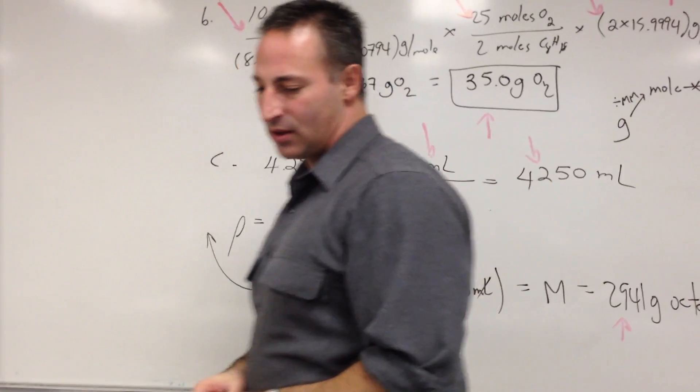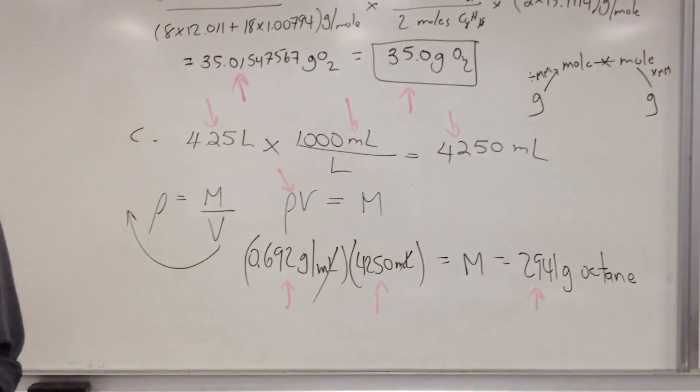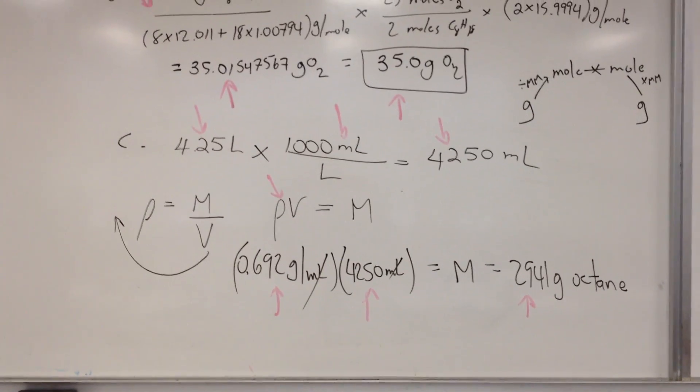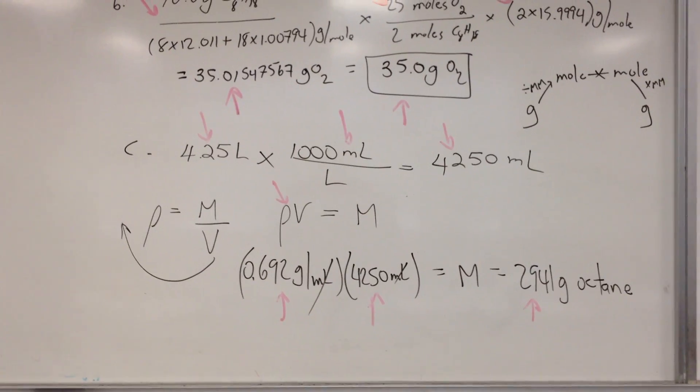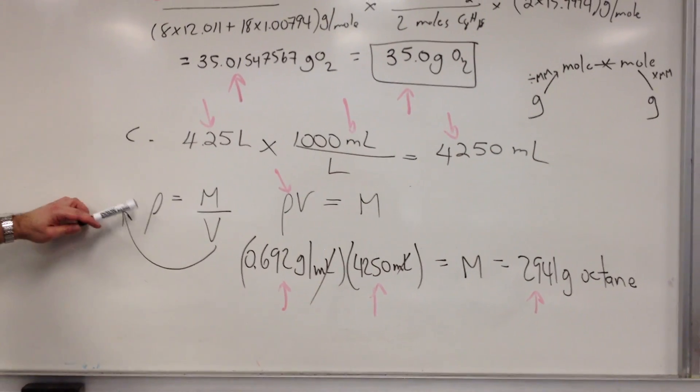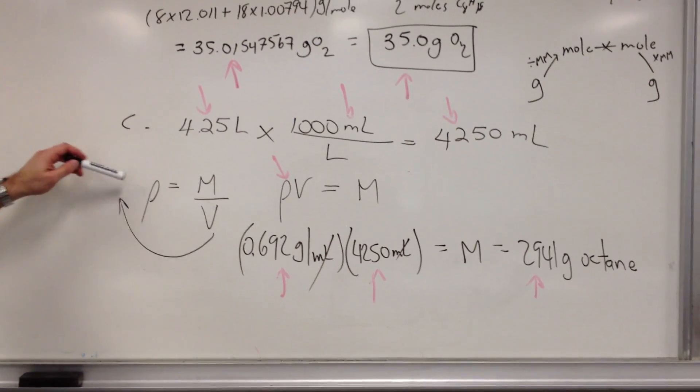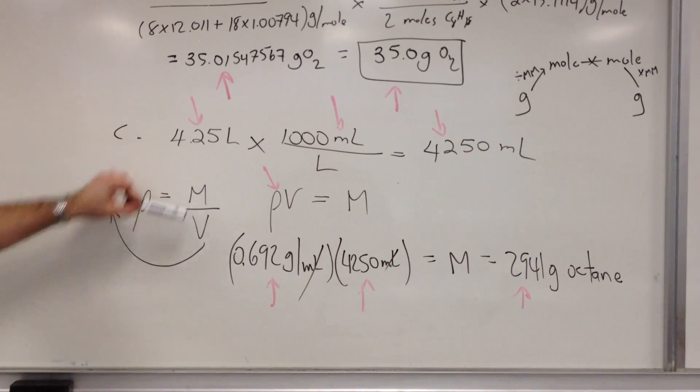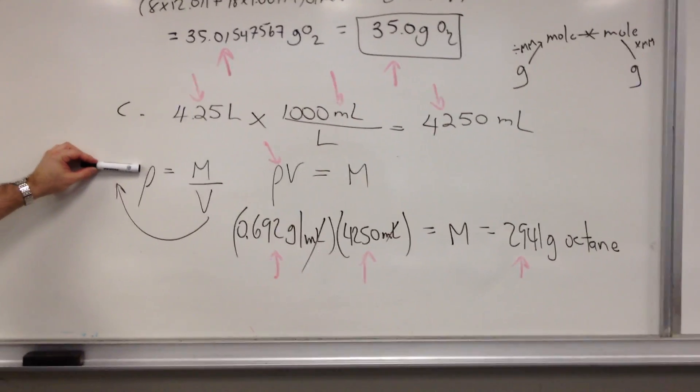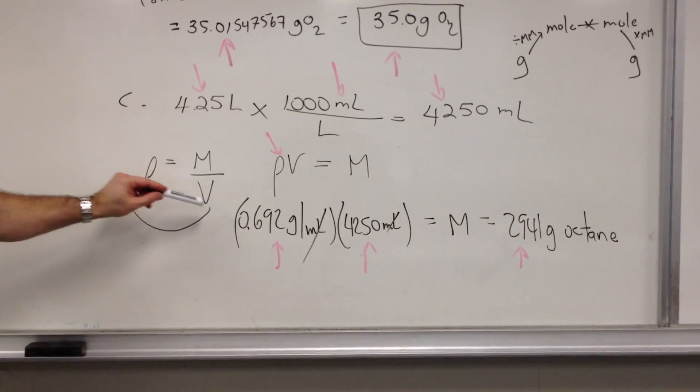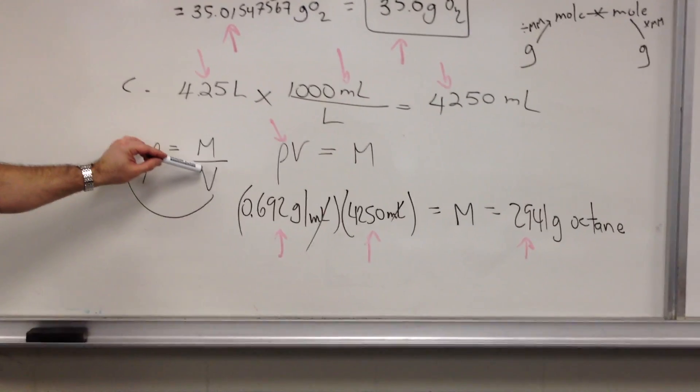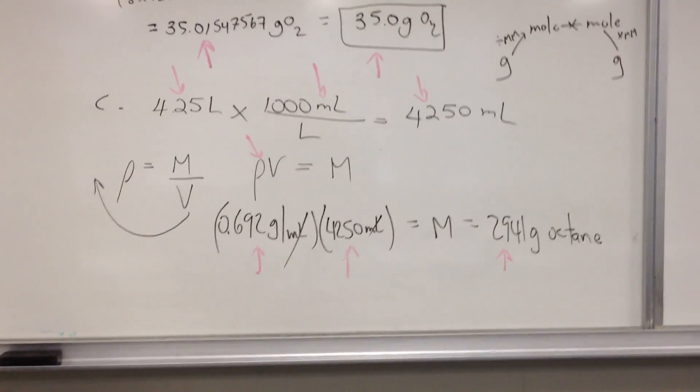In step C, this is probably the more difficult step. But we're told there are 4.25 liters of octane. And we're given the density of octane. To solve this part, you have to transpose some variables on the density equation. Density equals mass over volume. This letter here is rho. The Greek letter rho is used to represent density. So I've transposed the V because I know the density and I know the volume. And I'm trying to find the mass of octane.